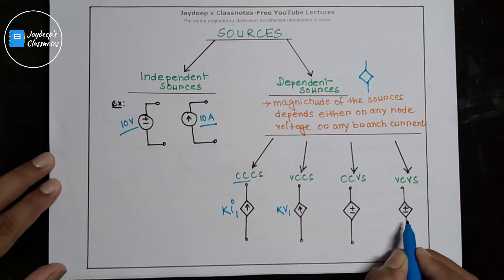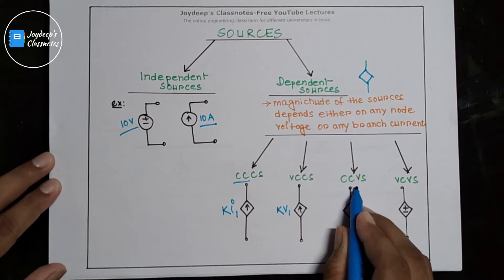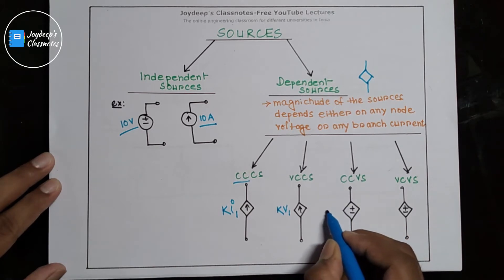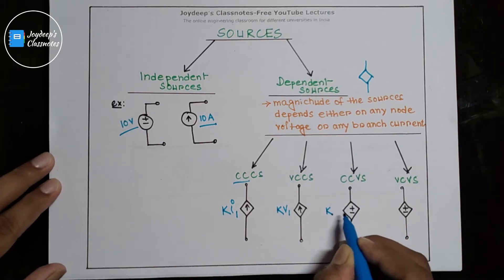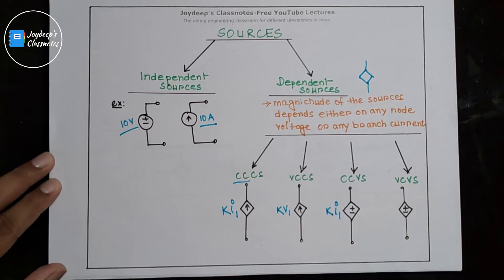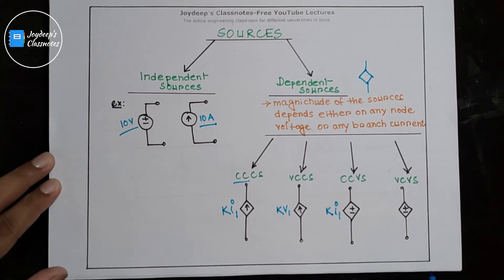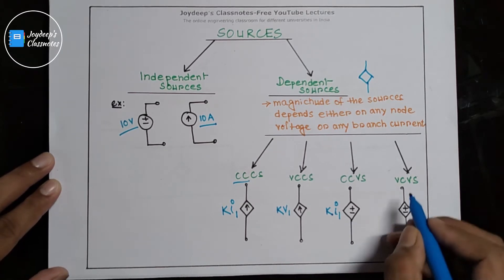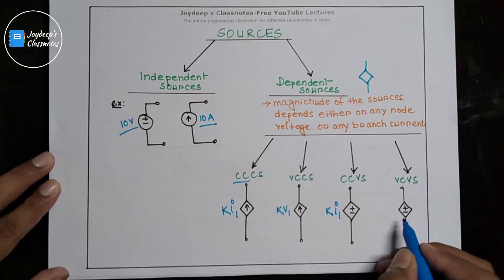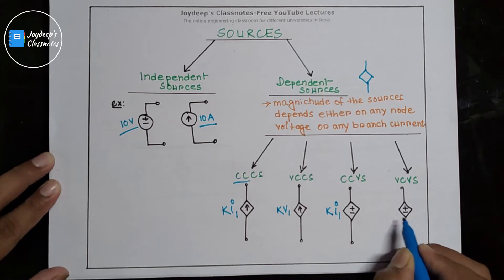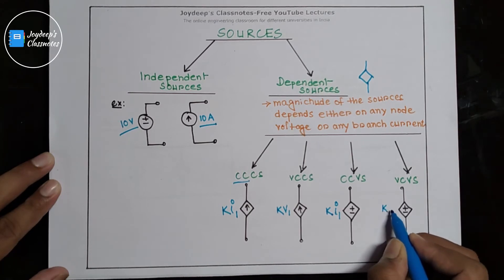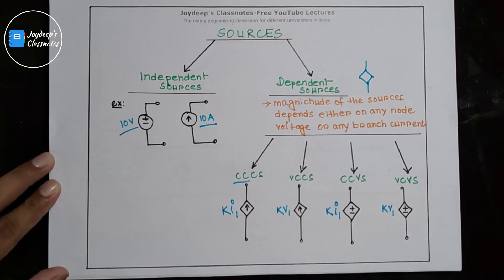These two are dependent voltage sources. The first is a current controlled voltage source — current controlled means the magnitude is K, a constant, into some current I1. So the magnitude of this source depends on that branch current. The second is a voltage controlled voltage source, meaning the magnitude of this dependent voltage source depends on any node voltage, say V1.